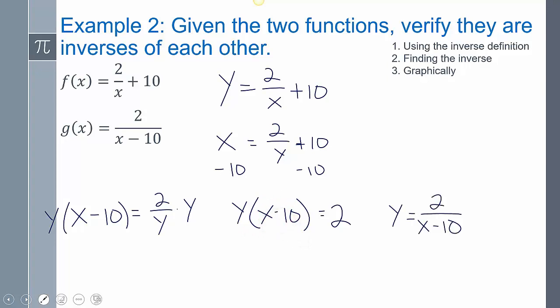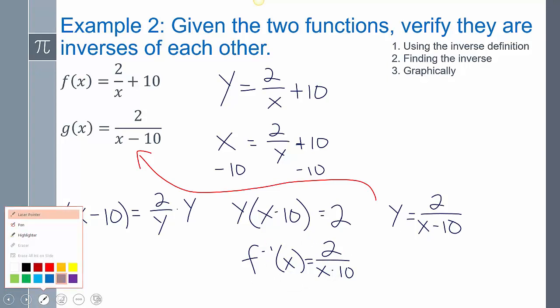Then I need to divide both sides by this. And so if I divide both sides by that, I have this, which is the same as this. So therefore, I could use that inverse notation if I had wanted to. I could say, even to go further, I could say g of x equals f inverse of x, which is 2 over x minus 10.